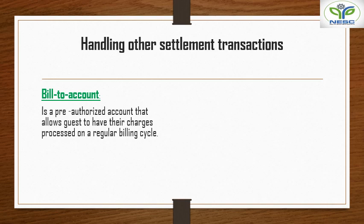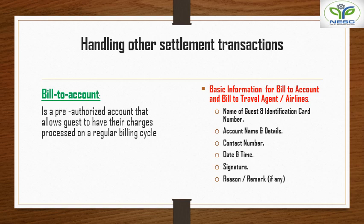Bill to company refers to a company account; bill to account may be an individual account; bill to travel agent refers to a travel agent account or maybe an airline account, like MakeMyTrip. There is some information required to collect from the guest: name of the guest, identification card number, account name, contact details, date and time of arrival, date and time of departure, signature of the guest, and any remarks.